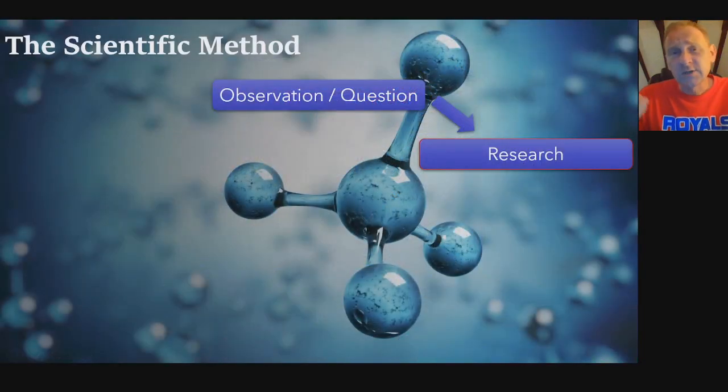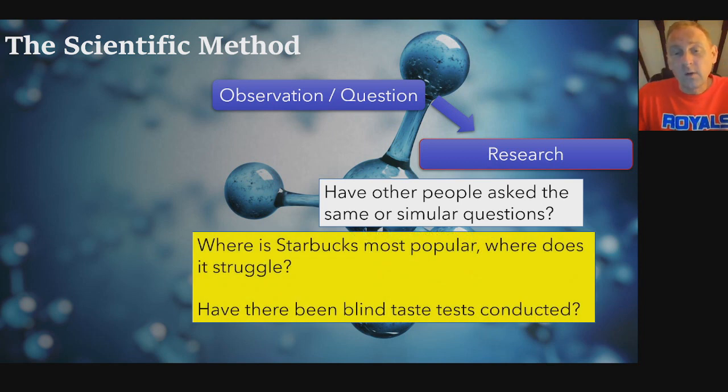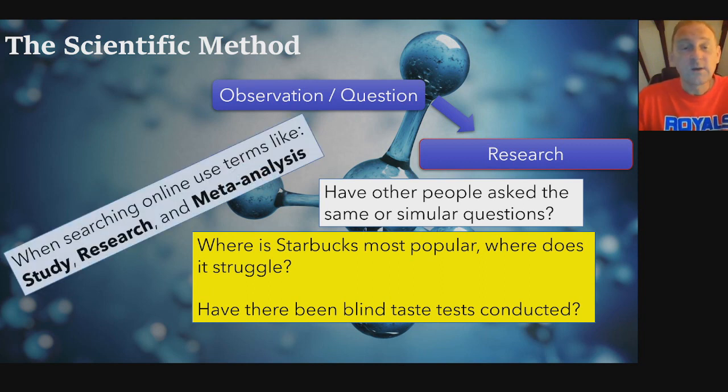Once you have that question, do some research on it and have other people ask the same or similar questions. As you do your research, you find other things that you'll start to kind of uncover. The thing I was wondering was where Starbucks is most popular and where does it struggle? It doesn't succeed everywhere, I found out. Have there been blind taste tests? Maybe you could find a study putting coffees together without people knowing what it is. Do they actually prefer Starbucks over other coffees? When you're searching things like this online, use terms like study in your question or research or meta-analysis.